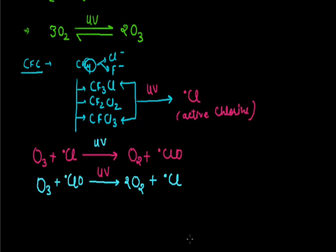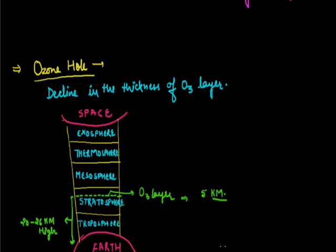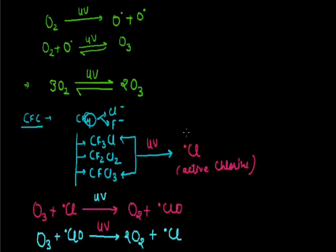They also inhibit photosynthesis in planktons and phytoplanktons, causing adverse effects on our food chain. They decrease the functioning of the immune system by mutation, and increase different kinds of skin cancers and eye diseases, basically cataracts.